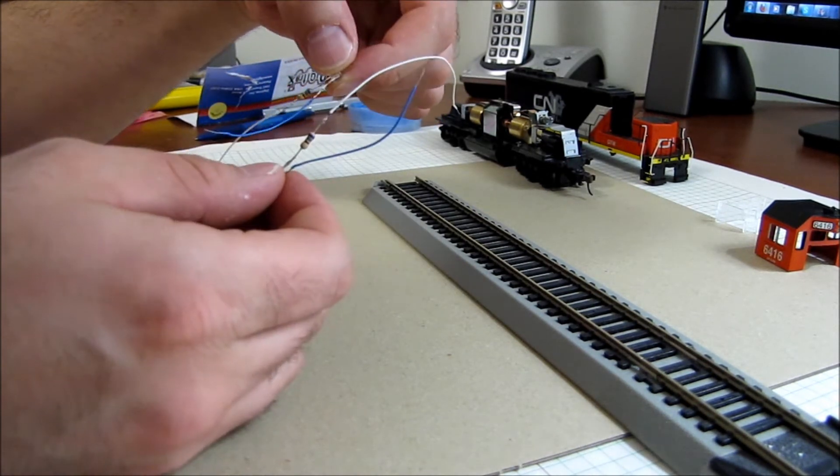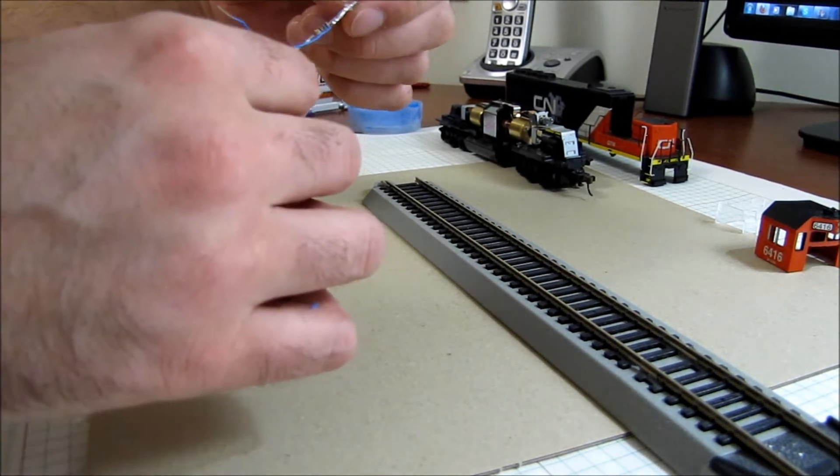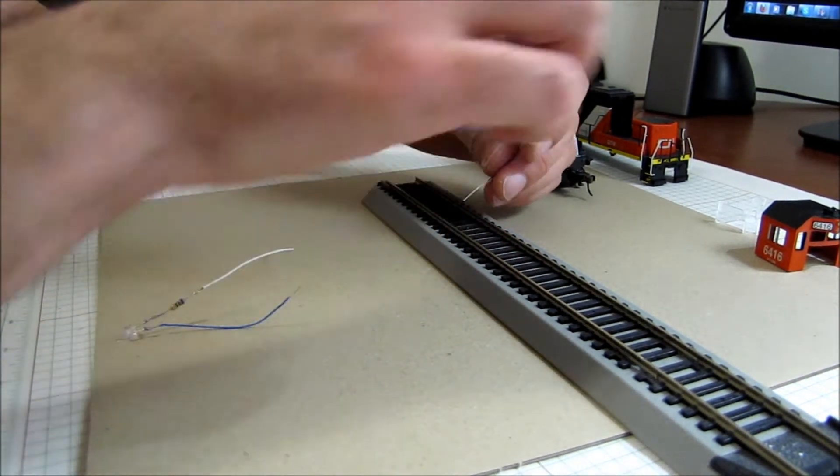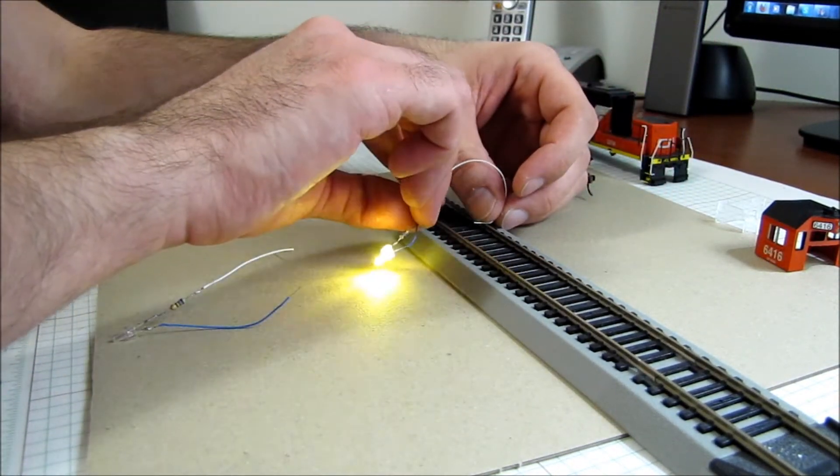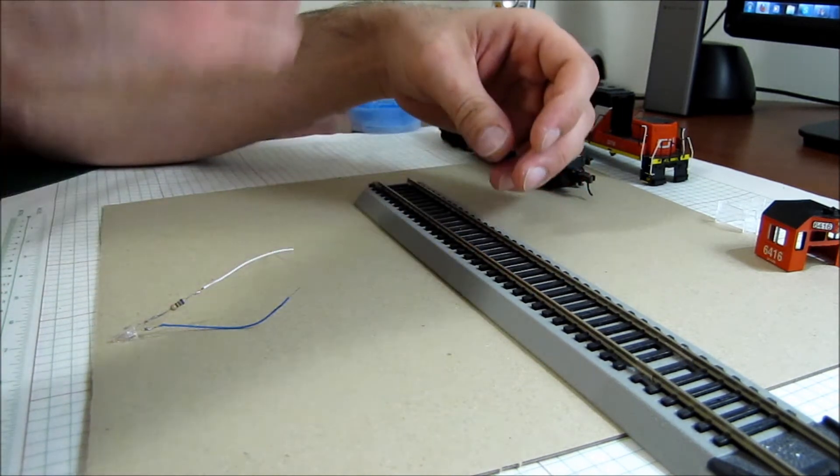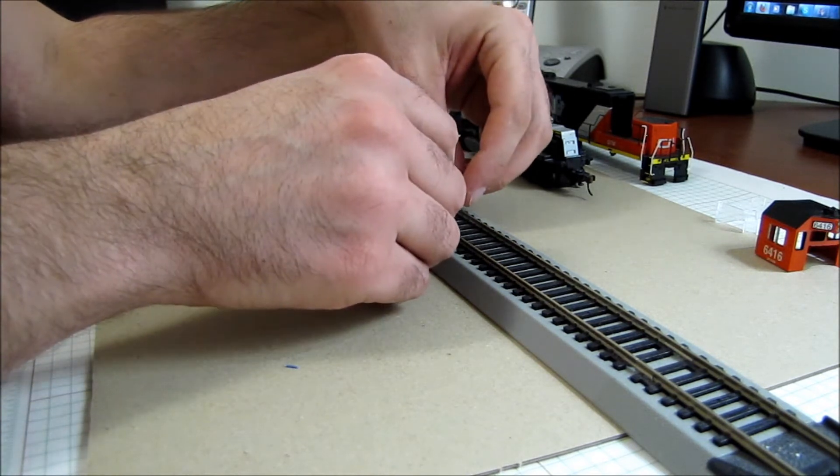I just went and soldered everything together there. As you can see, there's the LED, the blue wire on the positive, the white wire on the negative with your resistor. Done that to both of them there. I haven't put any heat shrink on them yet because we want to test them first.